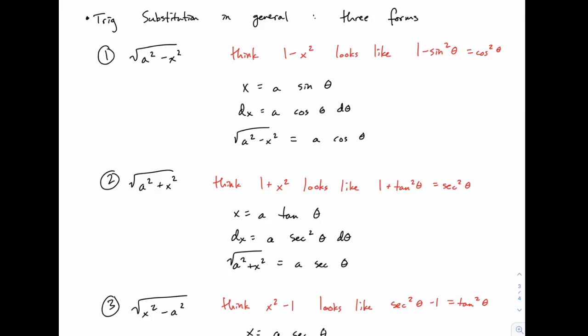Here's the overall structure of a trig substitution problem. Basically there's going to be a square root in one of three forms and each of these three forms is tied to the Pythagorean identity, either the form sine squared plus cosine squared equals 1 or the form tangent squared plus 1 equals secant squared. So instead of memorizing what I have written here, make sure you understand why each of these forms works the way that it does.